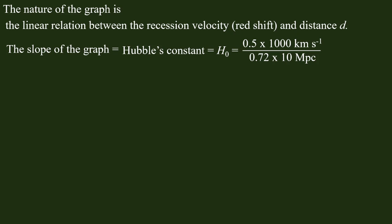From the graph, using the slope calculation delta x by delta y, the rise is about 1000 km/s over a run of 0.5 to 1 on the distance axis. The Hubble constant obtained from the slope of the graph is approximately 69.44 km per second per megaparsec.